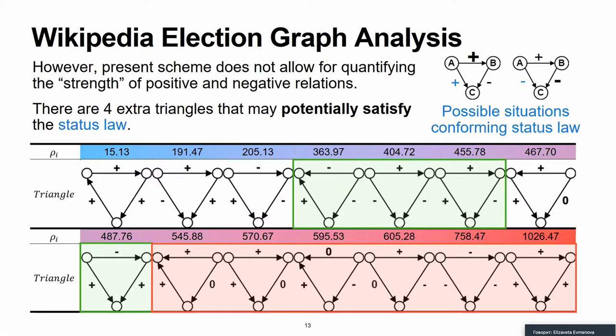In this case, there are four extra triangles underlined green that may potentially satisfy the status law. So, to make the status theory even more compatible with the observed results, we should allow for certain freedom in interpreting the status levels. Since we consider only three weights, any type of subordination has to fit into this rather narrow framework. It is clear though that often it is difficult to uniquely qualify the subordination relation.